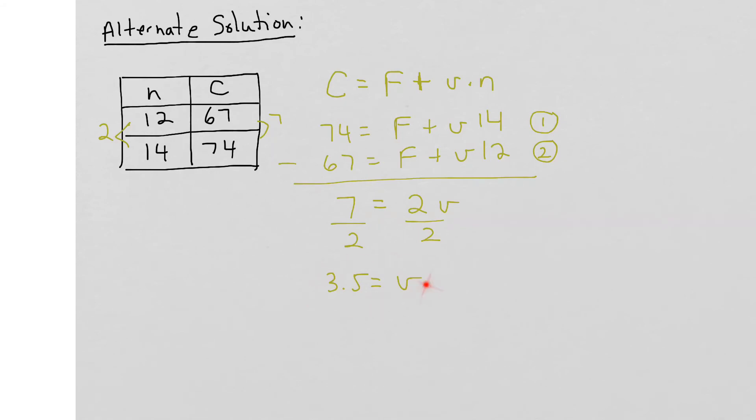Then I can substitute this value back into either one of the first two equations like we did above and see what we get for F. So again, if I just substitute here into equation number 1, just pick that one, random. So we get 74 equals F plus 3.5 times 14. And just like we did above, that would be plus 49. Moving it over to the other side, 74 minus 49 equals F, so F equals 25.